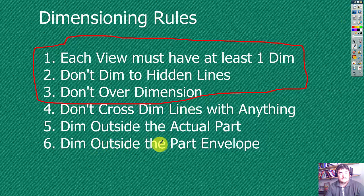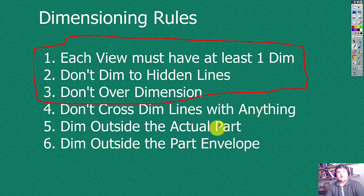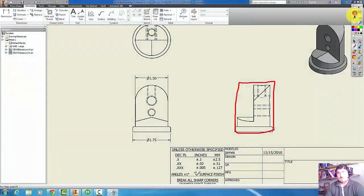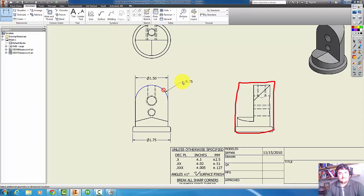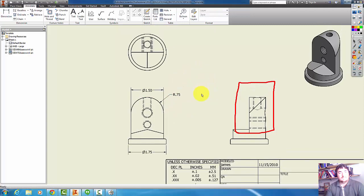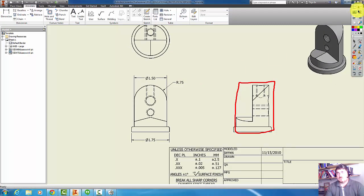And then if you can't do that, dimension on the part, but don't cross the dimension line. So we don't want to cross the dimension line with things. Those are the basic rules for dimensioning a drawing.